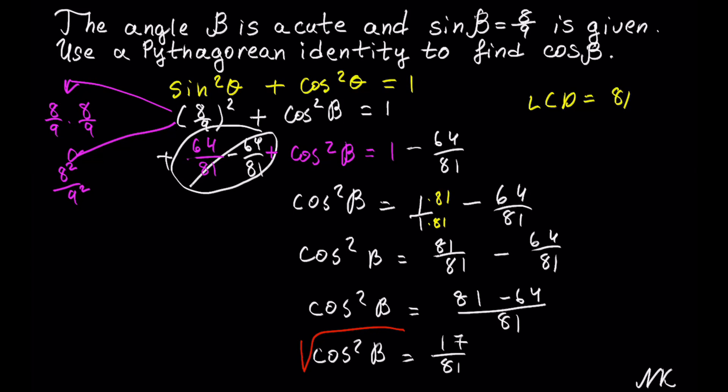Whatever we do to one side, we need to do the same thing to the other side, so square root of 17/81. Square root and a second power will cancel.